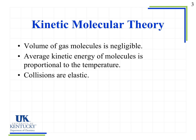The second tenet is that the average kinetic energy of molecules is proportional to the temperature. If you increase the temperature of a gas sample, the kinetic energy increases, which we see as an increase in velocity or speed. Recall from physics that kinetic energy equals one-half times mass times velocity squared; since the mass of the particles isn't changing, the speed or velocity must be what changes.